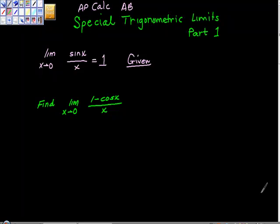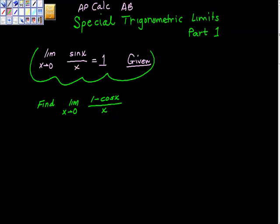Okay, so special trig limits part one. We're going to start with this idea, and I'm just going to give you this. This is going to be a gift to you, something that you should know, and that is that the limit of sine x over x as x approaches 0 is equal to 1. So given that, find the limit of 1 minus cosine x over x as x goes to 0.